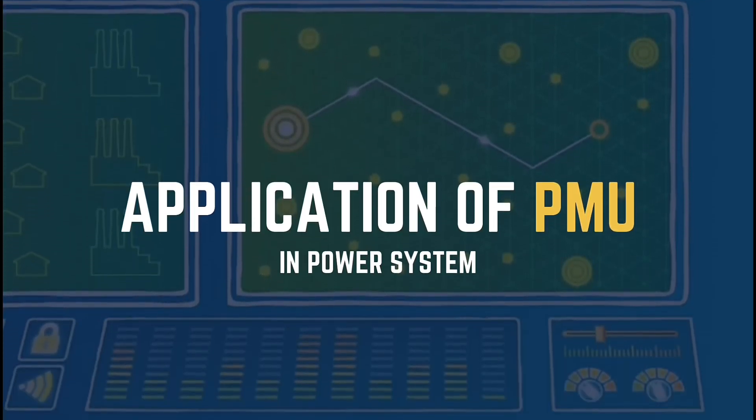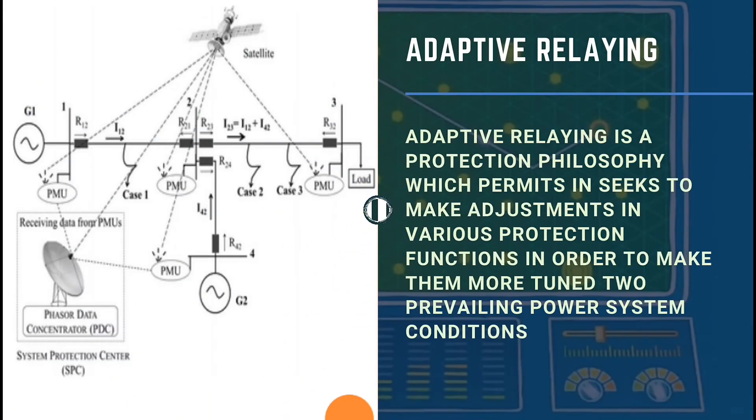Applications of PMU in power systems: Adaptive relaying is a protection philosophy which permits and seeks to make adjustments in various protection functions in order to make them more tuned to prevailing power system conditions.